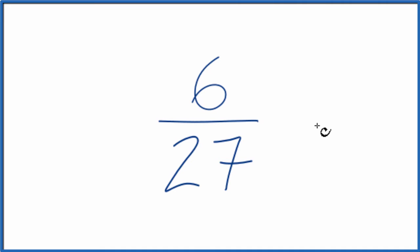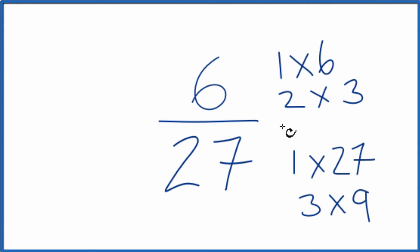So what we need to do is find a factor that goes into 6 and 27. So these are the factors for 6 and 27. As I look at the factors here for 6 and then for 27, the common factor, the greatest common factor here is 3.